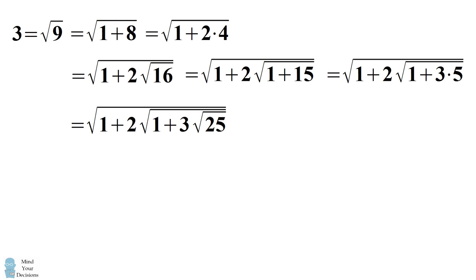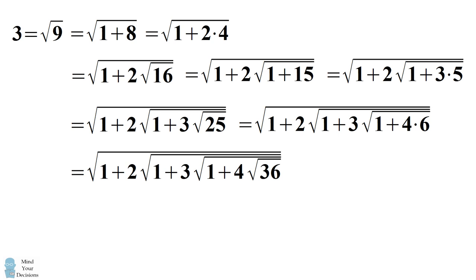25 equals 1 plus 24, and 24 factors out into 4 times 6. 6 is the square root of 36, and we've come to the next stage. In fact, I claim this pattern continues indefinitely. Therefore, we proved this infinite nested radical is equal to the original term, which is 3.